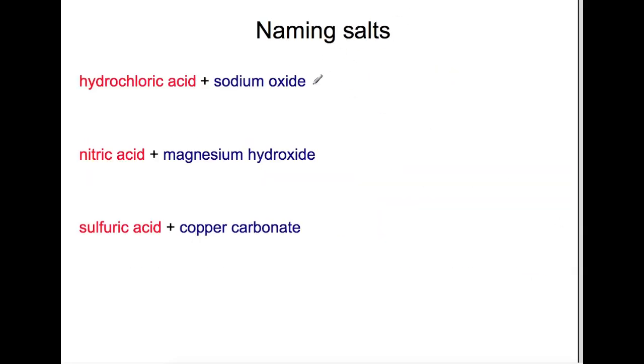Here we're going to have a go at naming the salts that are produced in all of these reactions. So for this first reaction we have hydrochloric acid plus sodium oxide, so the start of the name will come from the base, sodium, and the end of the name comes from the acid, which was hydrochloric acid. So we produce sodium chloride, which is just table salt. You will also produce water.